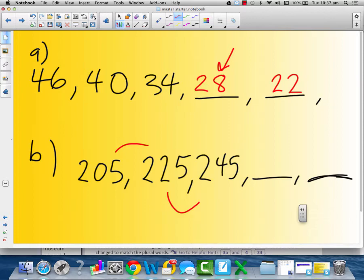I hope you worked out it's 20. So it's going up by 20. So what are these two numbers here going to be? Have a go. Put them in. It's going up by 20. Pause me. Okay, I hope you got it. It's 265 and 285.